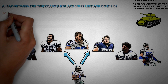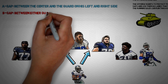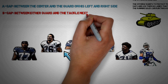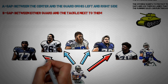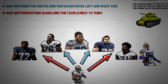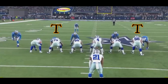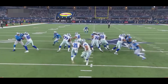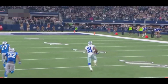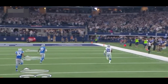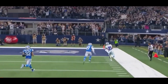Next, we move outside the guard to the B-gap, between either guard and the tackle next to them. You see the red lines showcasing between Tyron Smith, Lyle Collins, Xavier Suofilo, and Zach Mornin. In real life, we have the tackles lined up on the outside with the guards inside to their left and right. On this particular play, Elliott gets the ball from Prescott and runs between the right tackle and right guard all the way in for a touchdown against the Detroit Lions.